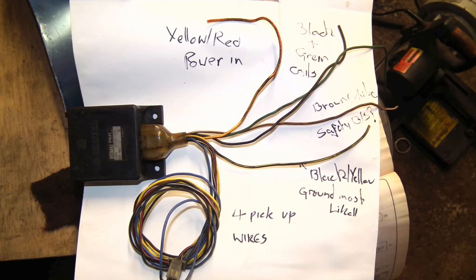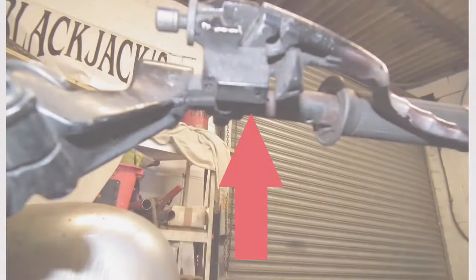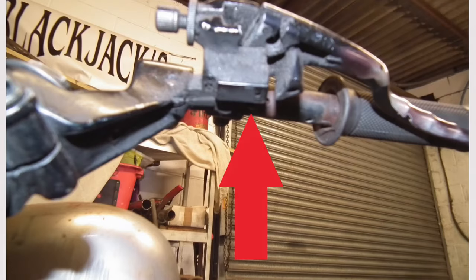The pickup wires have been separated out of the loom and the plug for those is still attached to the igniter, which tells us what four of them are for. Again, still a Kawasaki, so the black and yellow is the ground wire, yellow and red is power to the igniter, green and black are coil wires.